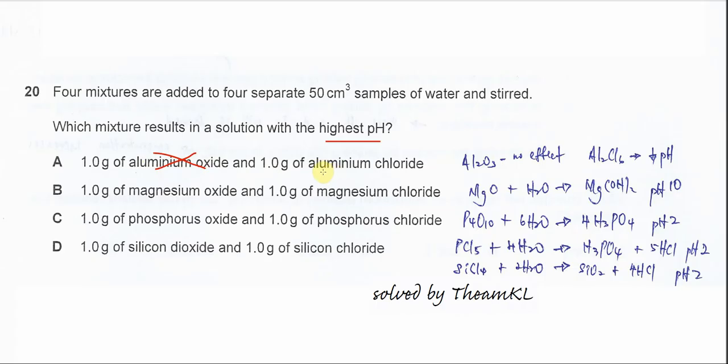About the aluminum chloride, we know that aluminum chloride will form an acidic solution. It will lower the pH of the solution. So A most likely will not be the answer.